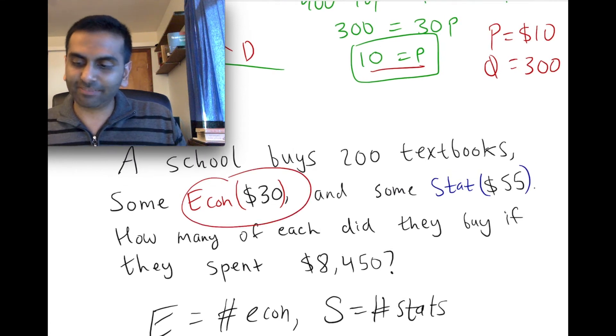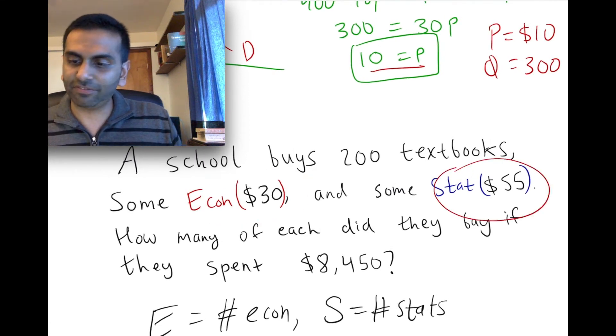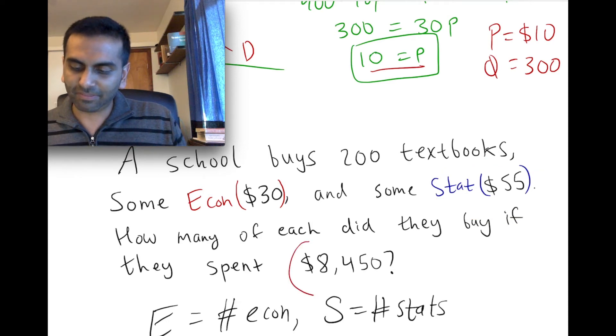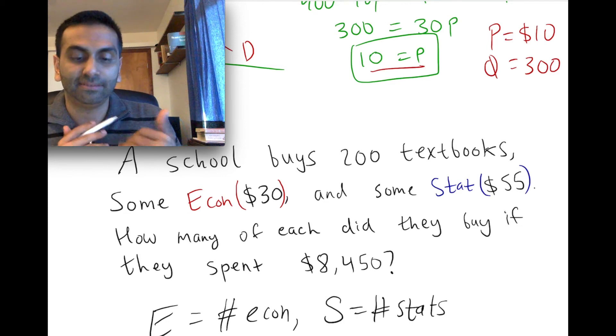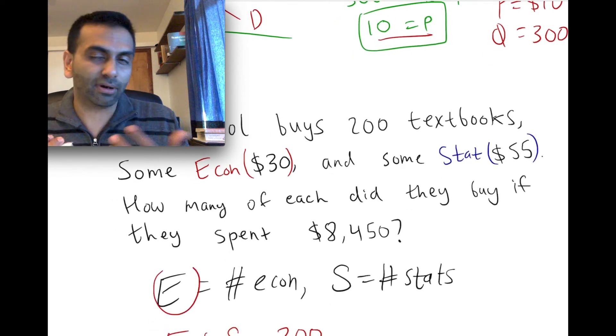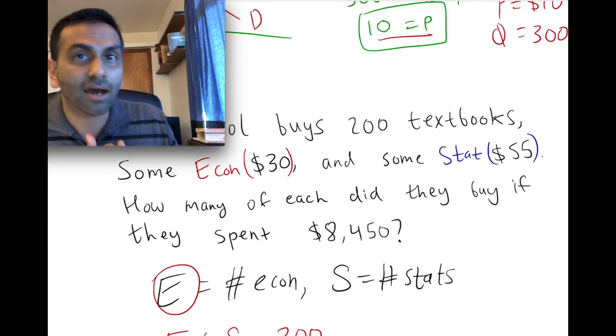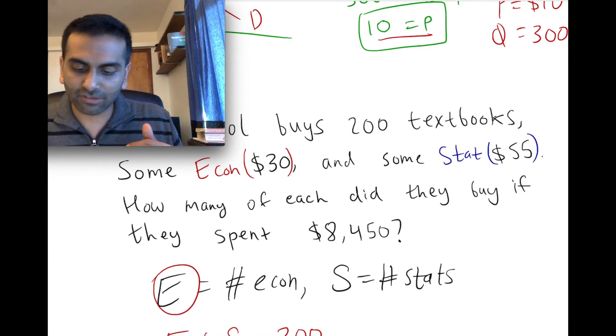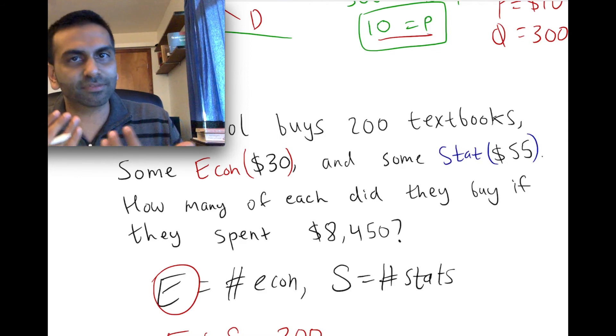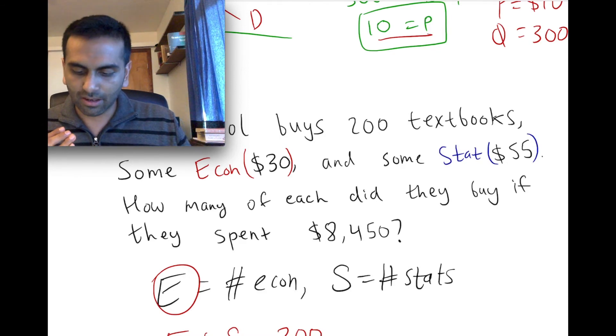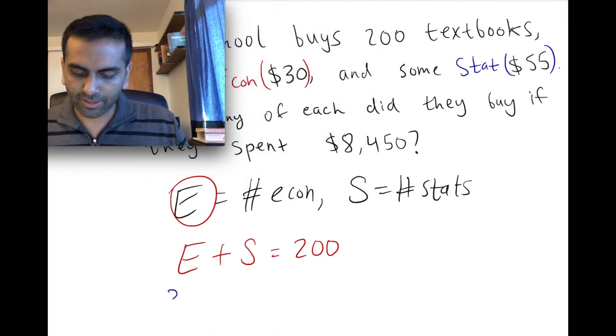Then the fact that econ textbooks are $30 and stats textbooks are $55 and that I spent a total of this much. Let's see. If I were to just ask you, if you buy E or X or whatever you call it, if you buy X econ textbooks and they cost $30 apiece, how much total money did you spend on econ textbooks? Well, it's just 30 times X. 30 times the number of econ textbooks. That's a dollar amount spent on econ books. So really, that's like 30 times E. That product, that's how many dollars I spent on econ textbooks.